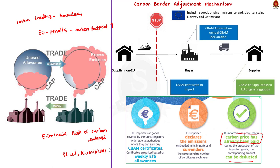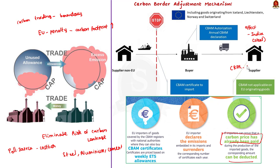CBAM primarily discourages environment-unfriendly production and consumer practices by making polluting sources costlier. Though it can incentivize EU consumers and producers to shift to more energy-efficient sources, it can severely affect developing countries like India, which is one of the major steel-producing countries, and it is completely against the principle of Common But Differentiated Responsibilities (CBDR-RC).